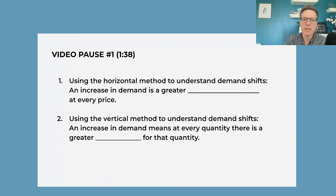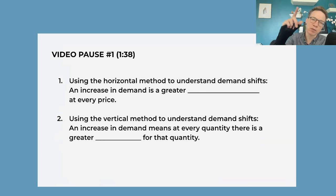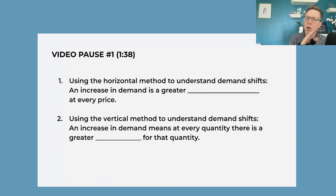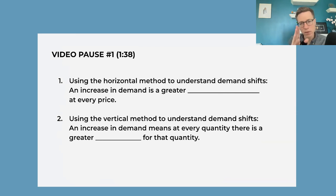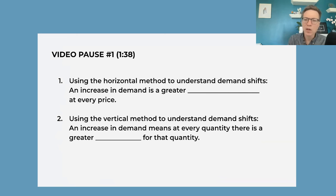The video goes over a shift in the demand curve, getting students to think about it in both the horizontal sense and the vertical sense. In the horizontal sense, when a curve shifts out, at any given price the quantity demanded will be higher. In the vertical sense, the marginal buyer is willing to pay more after the demand shift.